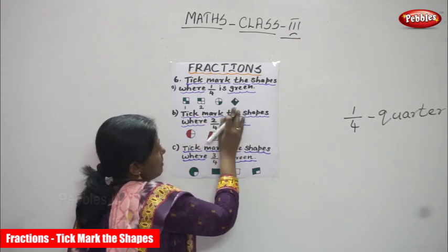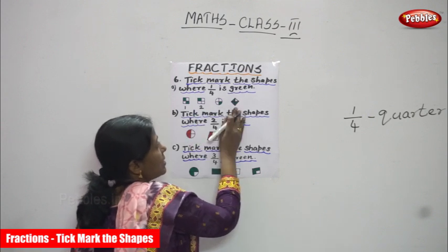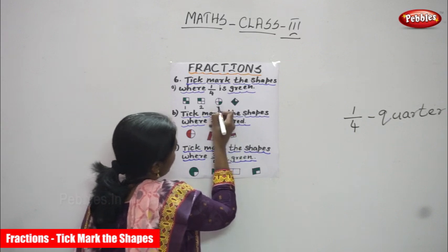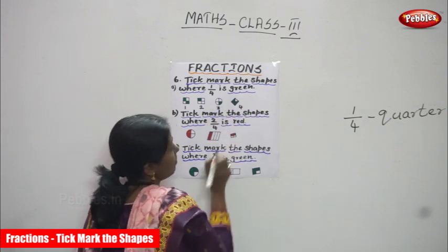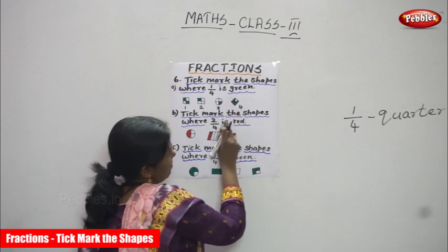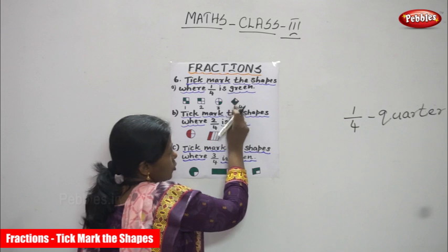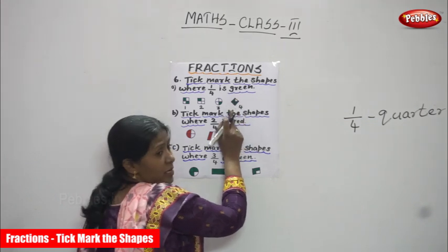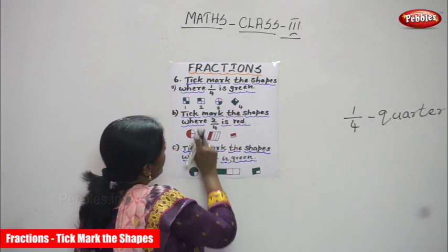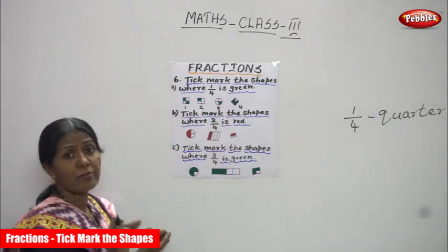All the diagrams I've drawn — the shaded part is green in color. Now the third diagram is a diamond shape. How many parts are shaded? I cut it into four equal parts but shaded three parts, so three parts are in green color. The heading says tick mark the shapes where one by four is green.